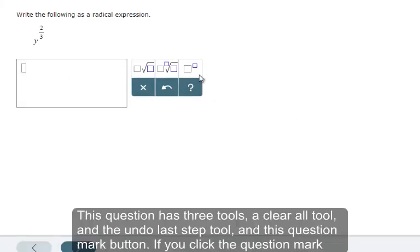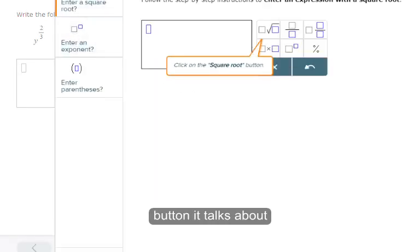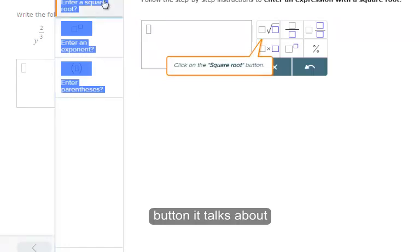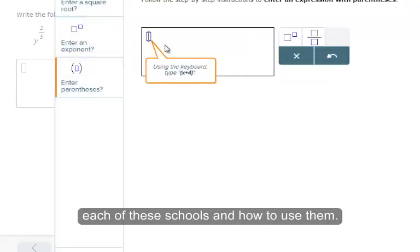This question has three tools, a clear all tool, and the undo last step tool, and this question mark button. If you click the question mark button, it talks about each of these tools and how to use them.